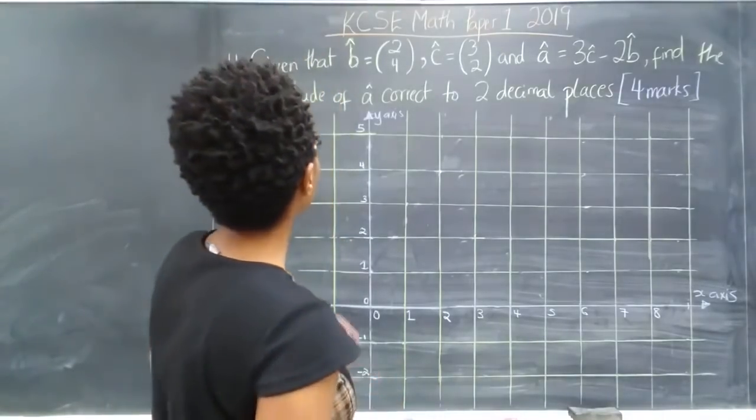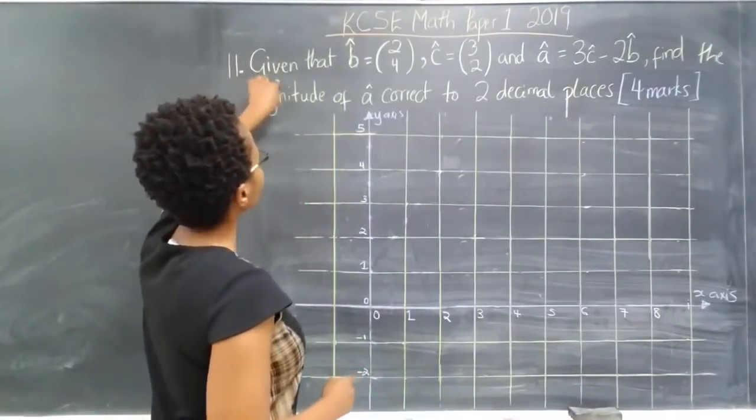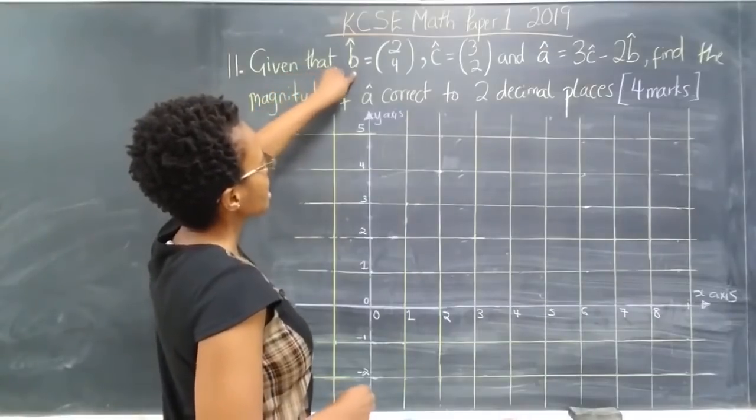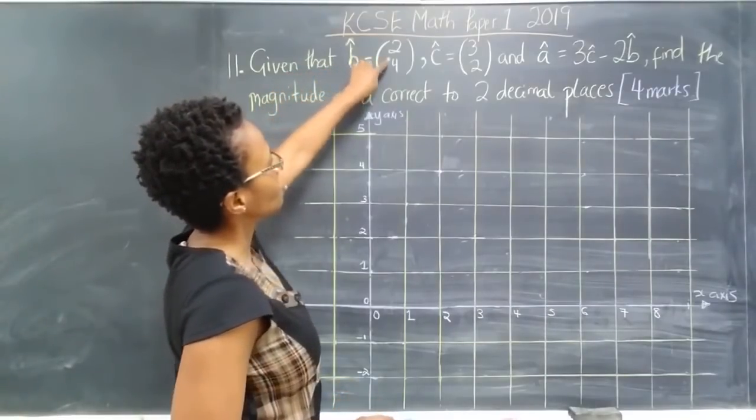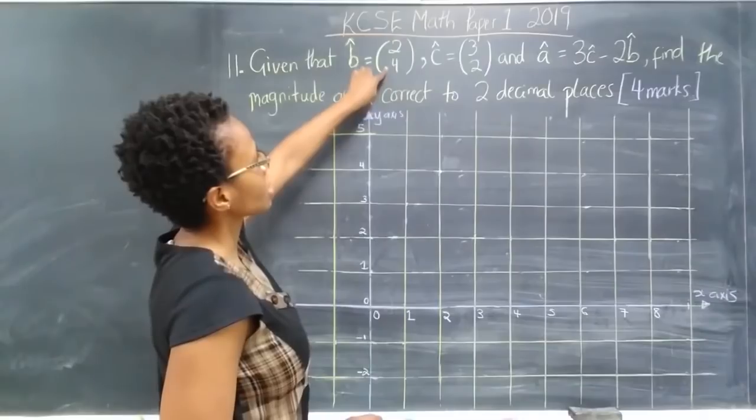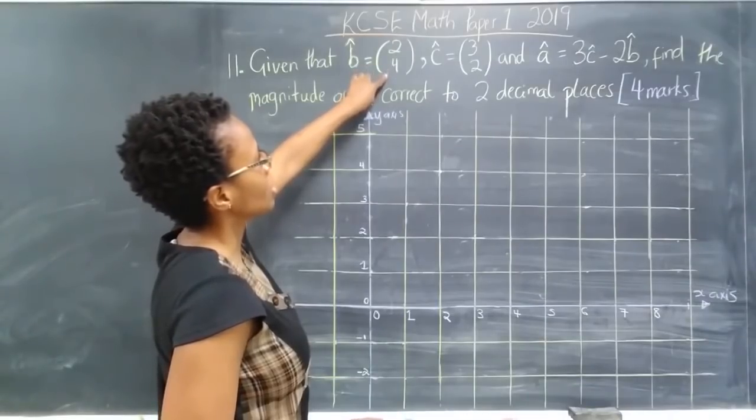I'll just go ahead and read the question. So it asks, given that the vector b is equal to (2, 4), so this is column matrix notation.